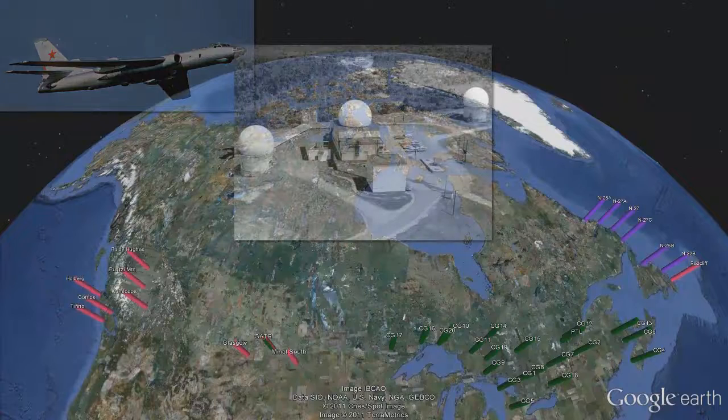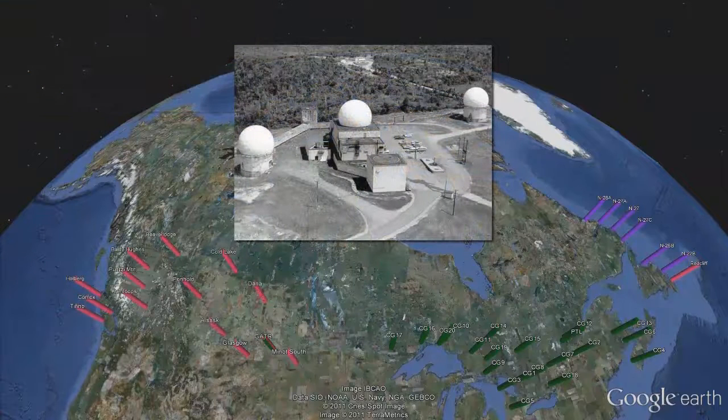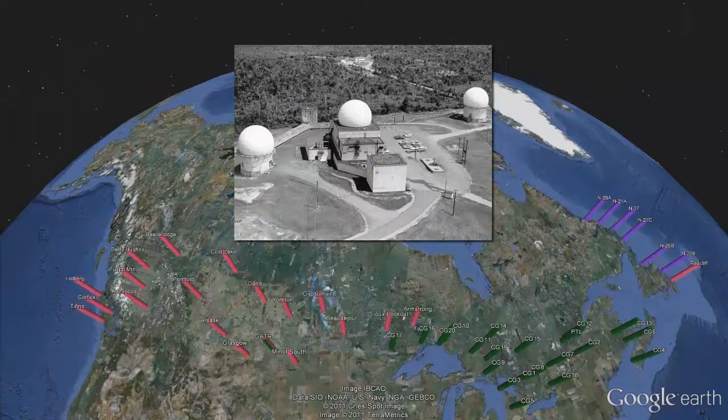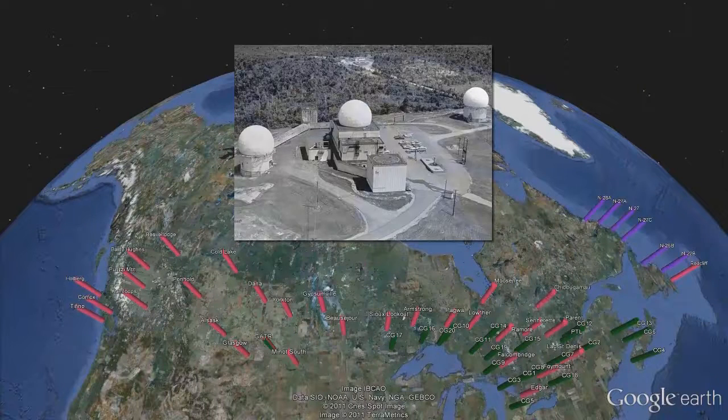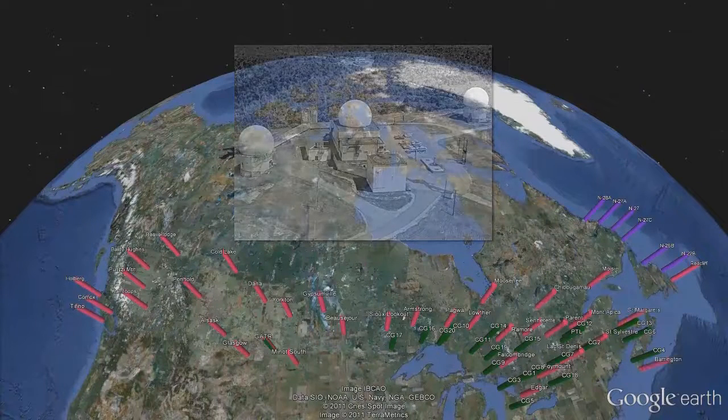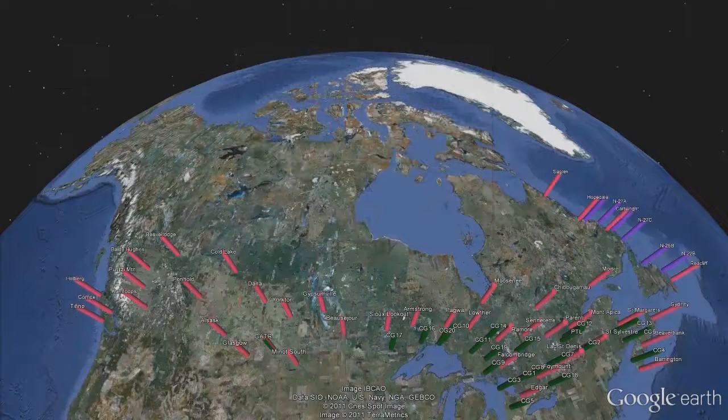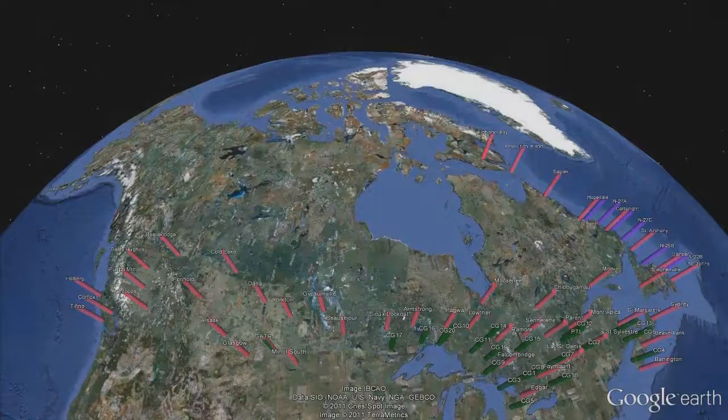This system had two technical flaws. Firstly, the pulsed mode radar was unable to detect objects traveling close to the ground. Secondly, the location of the radar stations only provided a few minutes of warning to the major population centers within Canada and the U.S.